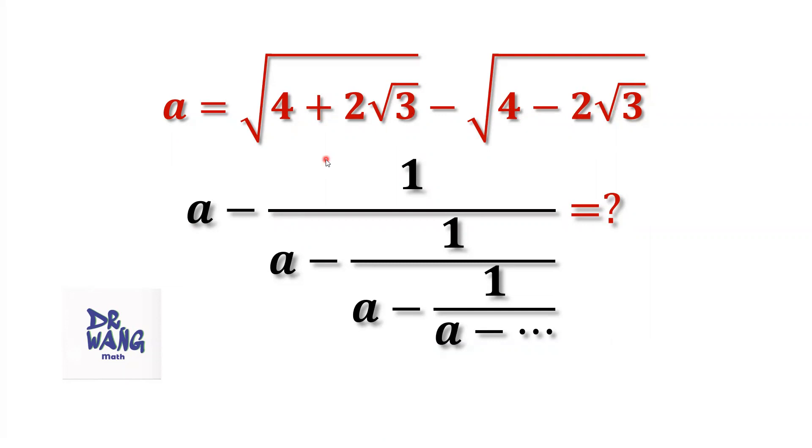what is the value of a minus 1 over a minus 1 over a minus forever? This is the continued fraction. We have an infinite number of fractions here.